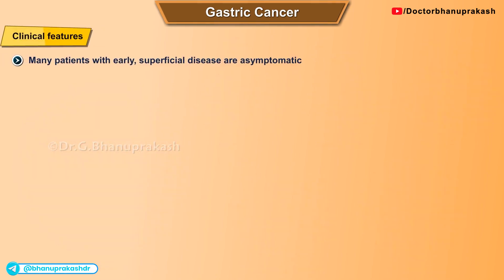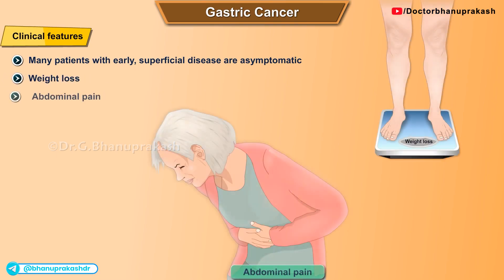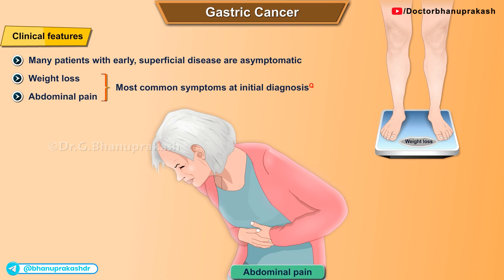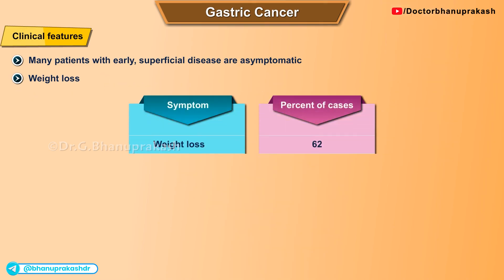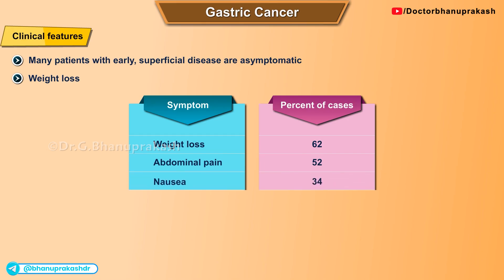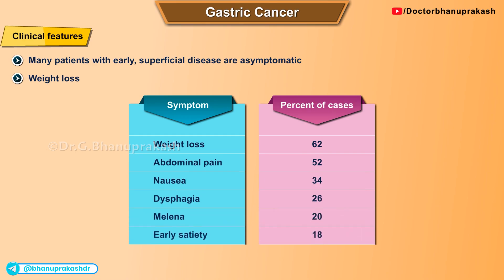Many patients with early superficial disease are asymptomatic. As the disease progresses, patients may present with weight loss and persistent abdominal pain, which are the most common symptoms at initial diagnosis. Weight loss is present in 62 percent of patients, abdominal pain in 52 percent.